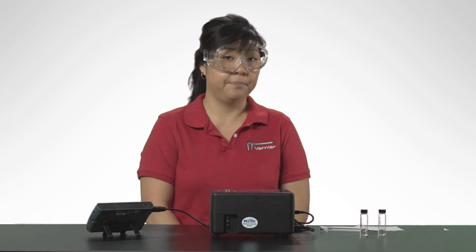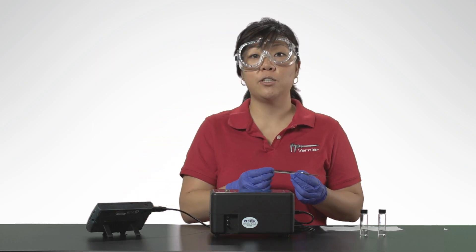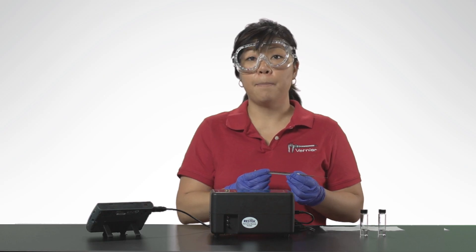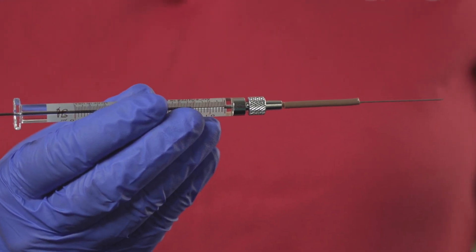While waiting, flush your syringe with the sample to be tested. The glass syringe is fragile. Be careful not to bend the needle or bend the plunger. Never pull the plunger back more than 50% of the total volume.